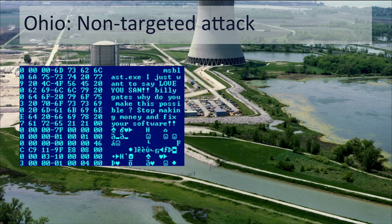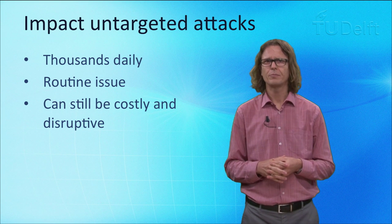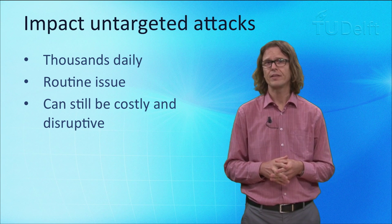The 2003 incident in the Ohio nuclear power plant, which I mentioned earlier, is an example of a non-targeted attack. It was caused by the Slammer worm, a piece of malware that tried to attack all computers that contained a certain vulnerability in Microsoft Windows. The attackers didn't know — and probably didn't care — that the worm would infect machines in the nuclear power plant and bring down the safety systems of the plant.